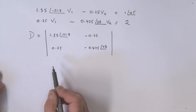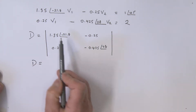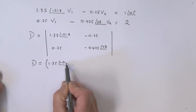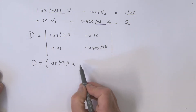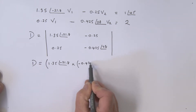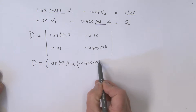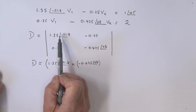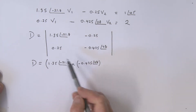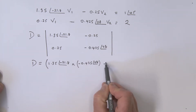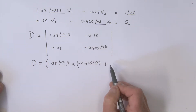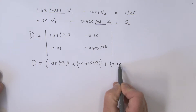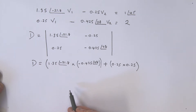Let's expand D out. D is equal to this times this, so that's 1.35 at an angle of minus 21.8, multiplied by minus 0.425 at angle 28. Then we have minus that times that — minus a minus — which actually gives me a plus, so this becomes 0.25 multiplied by 0.25.